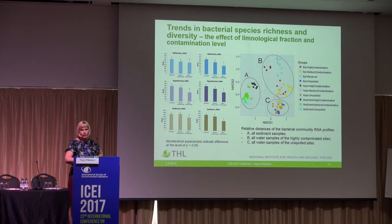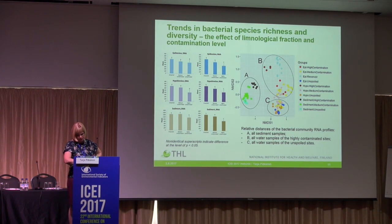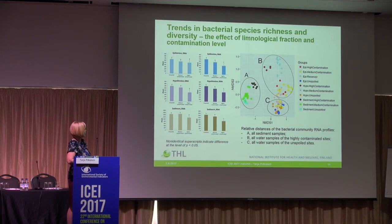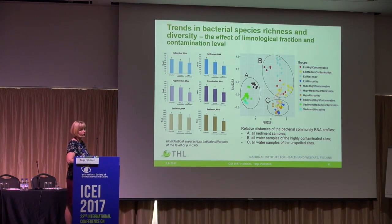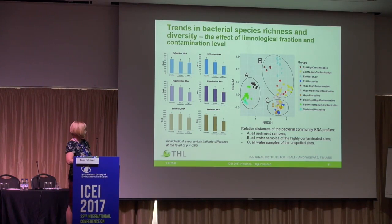Looking at bacterial communities in those lakes based on next-generation sequencing results, we see clear trends associated with pollutant concentration levels. Pollution significantly lowers bacterial richness — the first group is unspoiled, then medium contaminated, then highly contaminated, and bacterial richness is always lower at highly contaminated sites. This holds true for all hydrological fractions, and the decline in bacterial richness is more drastic in the RNA fraction compared to the DNA fraction.